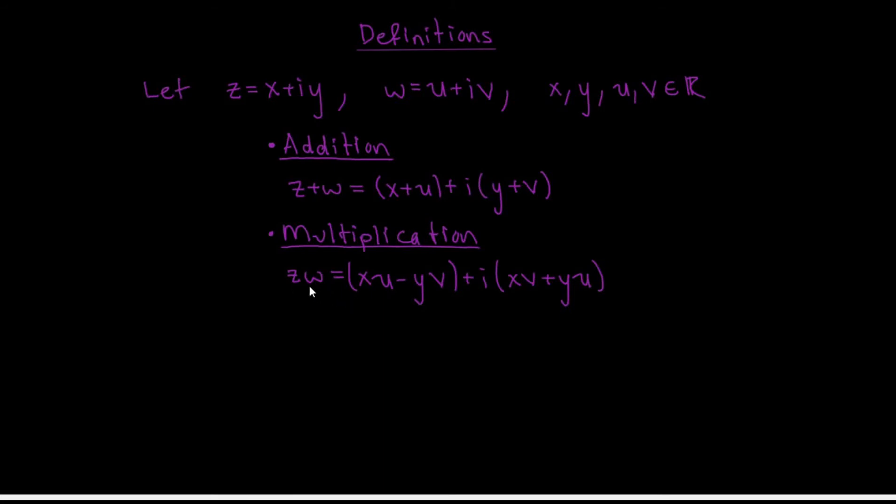The product of z times w is just what you get by expanding out the product of x plus i y times u plus i v, using the distributive law, together with the fact that i squared is equal to negative 1. One thing that's worth mentioning at this point is that the set of complex numbers, together with addition and multiplication, form what's called a field. That just means that addition and multiplication are associative and commutative, that they satisfy a distributive law, that every number has an additive inverse, which is its negative, and that every non-zero number has a multiplicative inverse, which I'll show you how to find in just a minute.